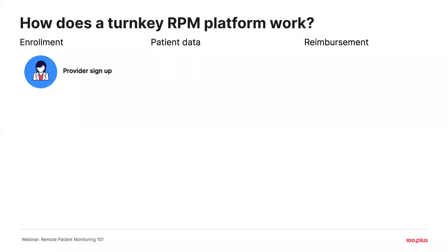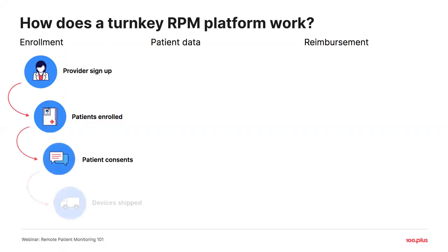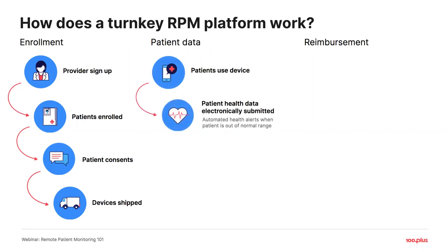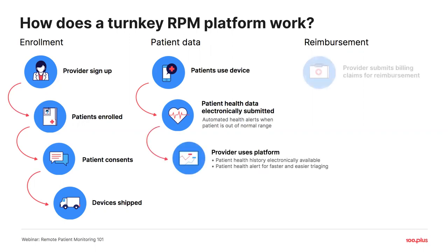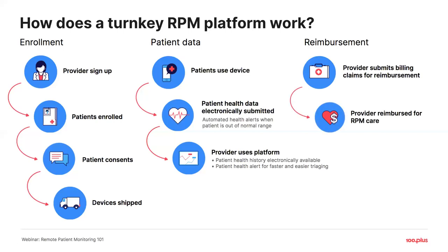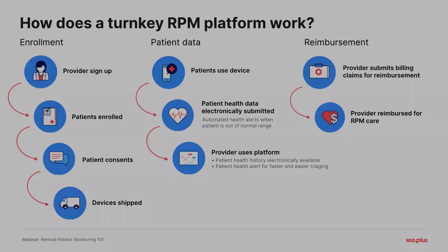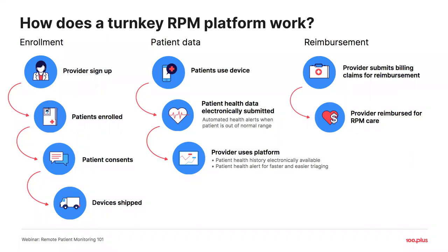So how does a remote patient monitoring platform work? To get started, you and your patients enroll, which comes with patient consent to remotely transmit their data. The devices are then shipped directly to the patient, and you automatically start receiving readings as soon as they begin using the devices, so you can see those clinical results in real time. Once that time has been spent, you bill Medicare for reimbursement. A key feature of any good RPM platform is that when something tests out of range, you receive an alert and are directed to the patient's file within the portal to review results and act accordingly.